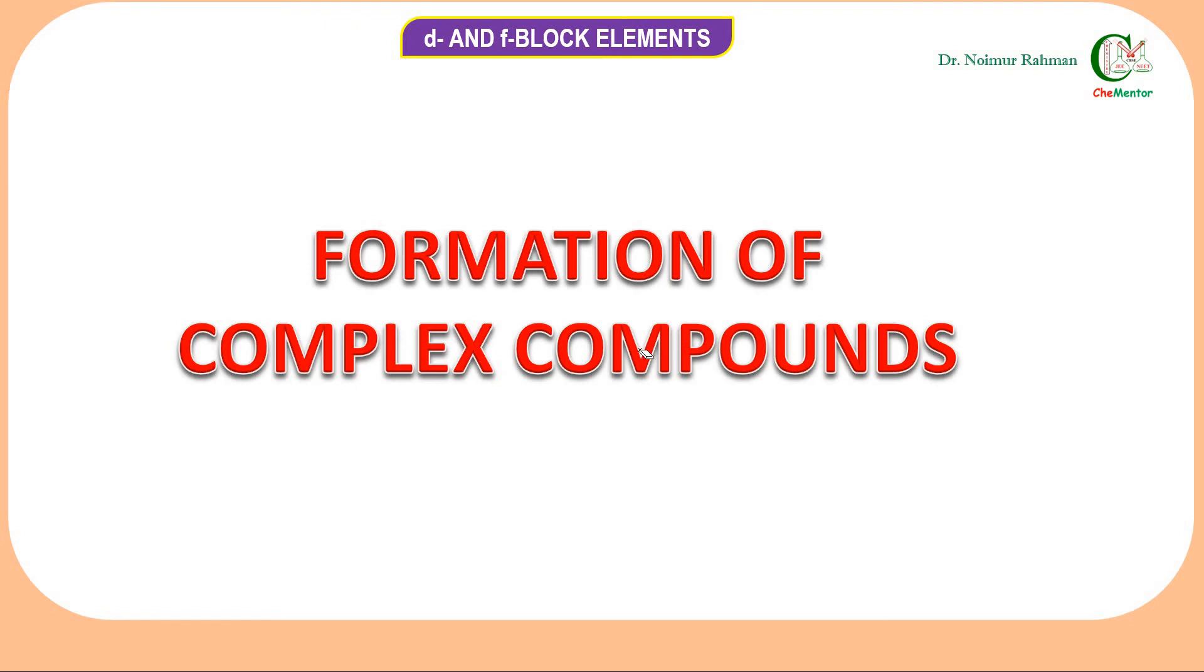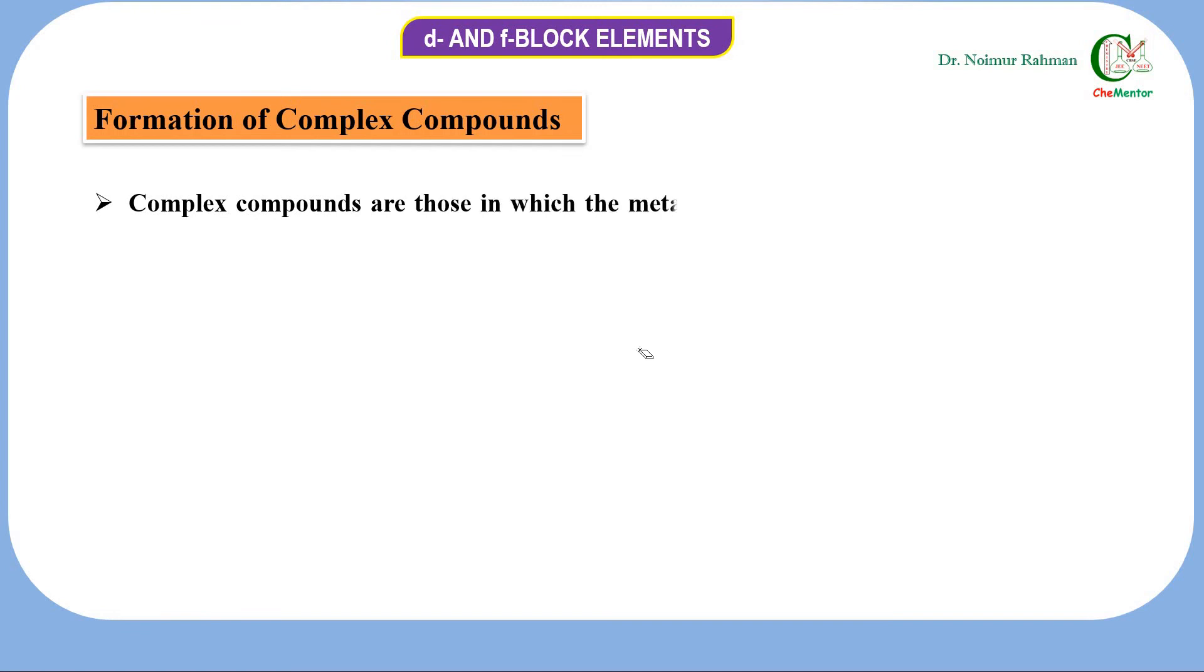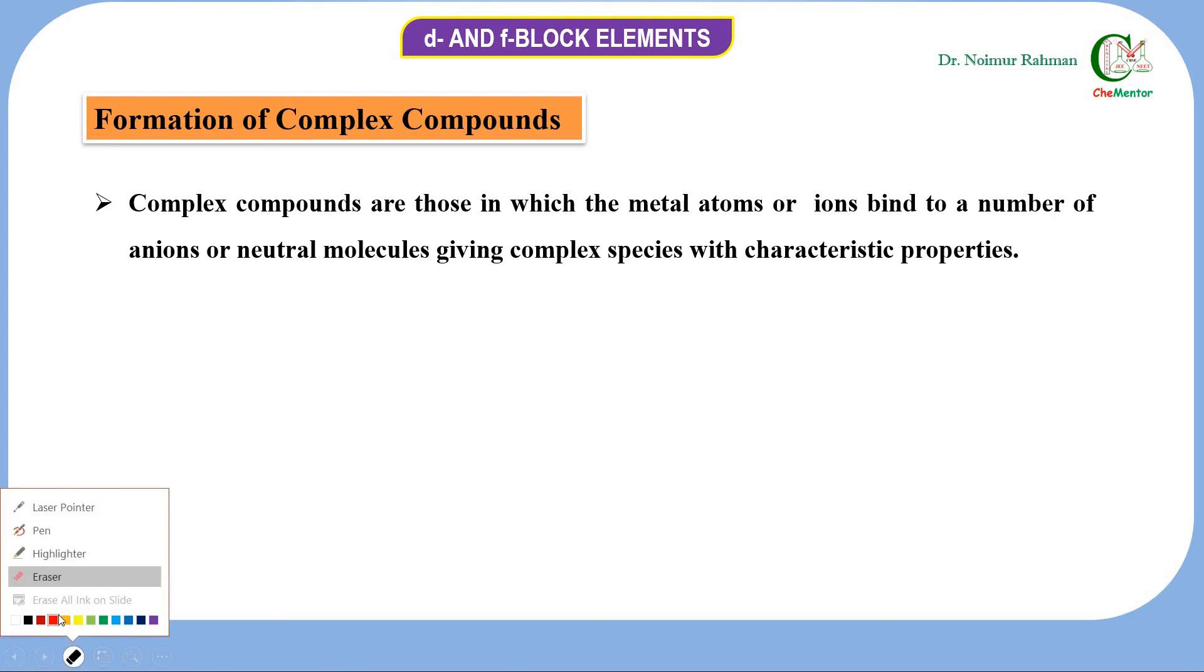Traveling ahead, we have formation of complex compounds. Complex compounds are those in which the metal atoms or ions bind to a number of anions or neutral molecules giving complex species with characteristic properties. The metal from d-block elements will bind with neutral molecules or negatively charged molecules through coordinate covalent bonds with ligands.